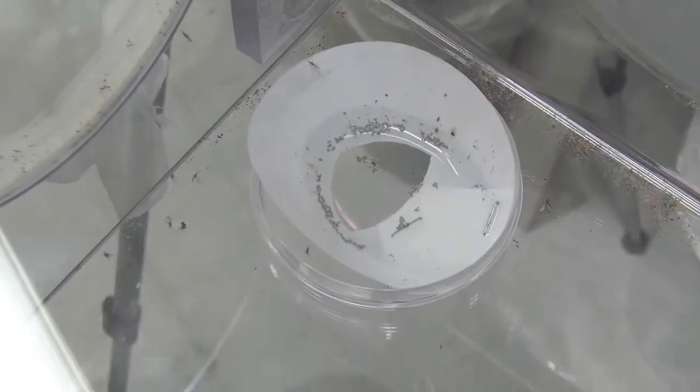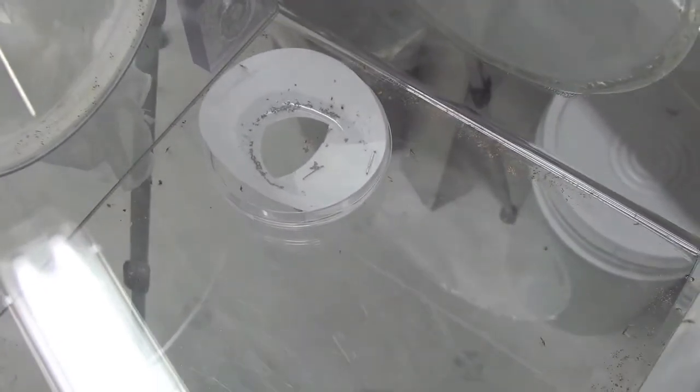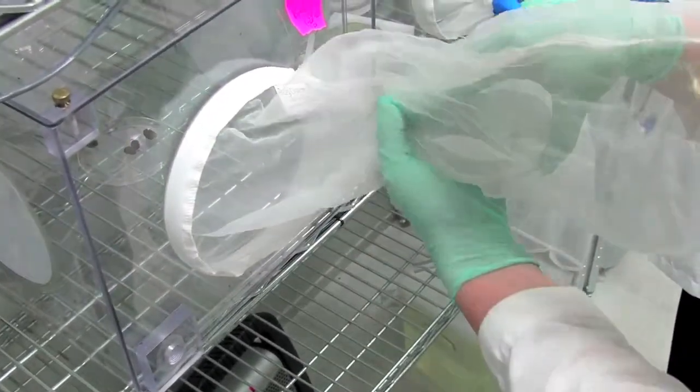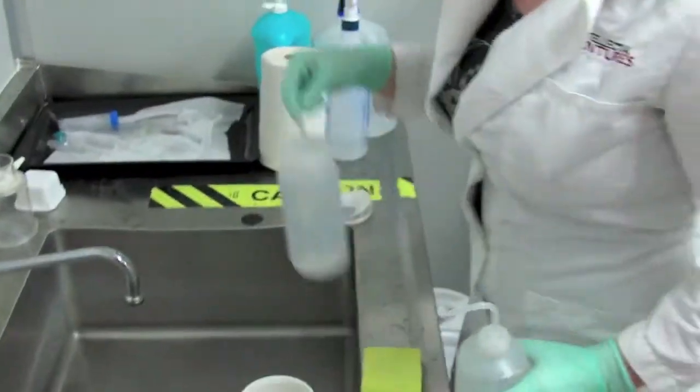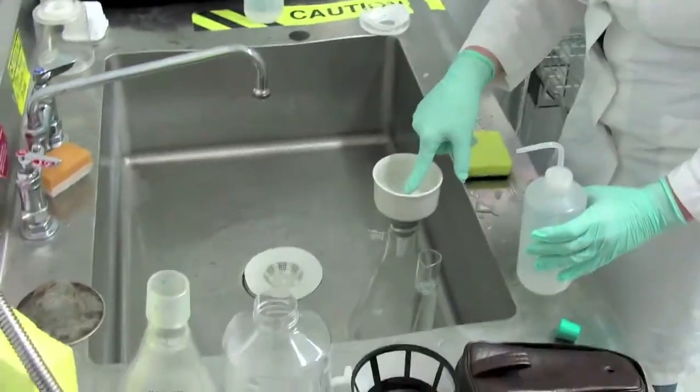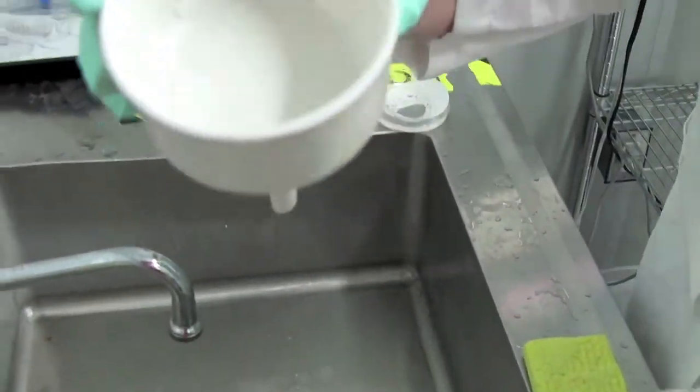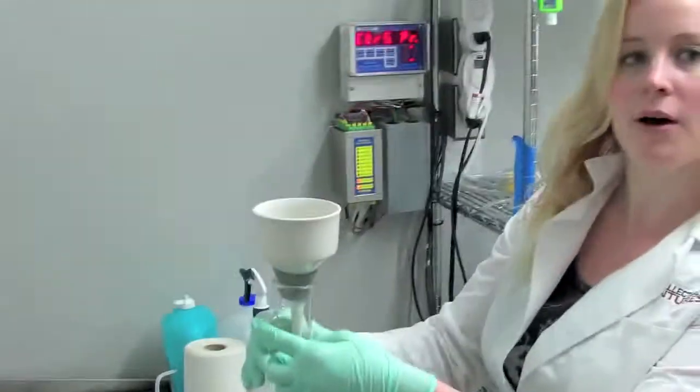After the eggs are laid we bleach them. I'll show you that in a second. I'm going to take the eggs out here, being careful not to get any adults. I first want to put the eggs in this little filter paper here and put that in here. This is for a vacuum pump.